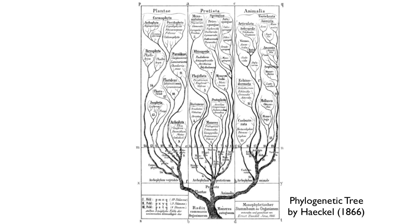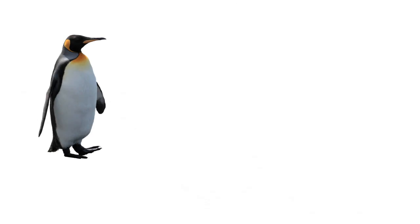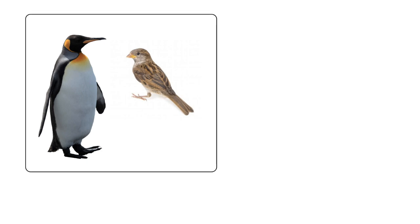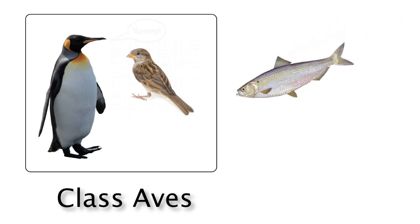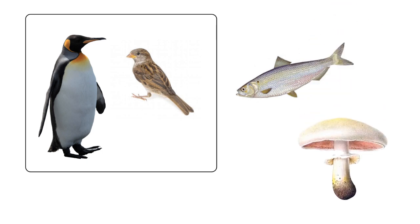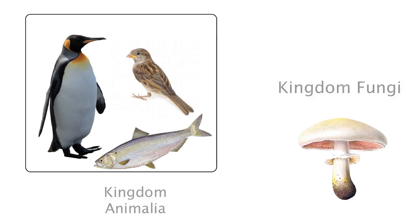But Linnaeus really influenced all the work to come — the idea of building hierarchies of similarities to determine different categories and levels of relatedness. By 1866, phylogenetic trees were being drawn to show who was related to whom and where ancestors were. We use the same ideas today. For example, a penguin and a sparrow should obviously be grouped together because they share beaks and feathers. They are more similar to each other than either is to a herring. But if you compare all three to a mushroom, you would group the herring with the penguin and sparrow, because those three are all animals and the mushroom is a fungus.